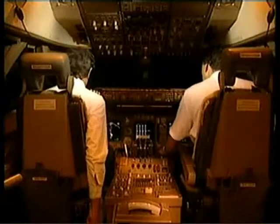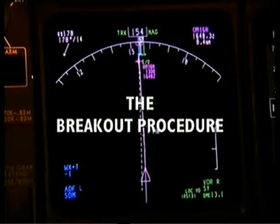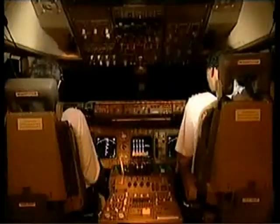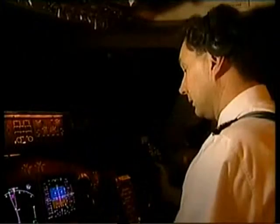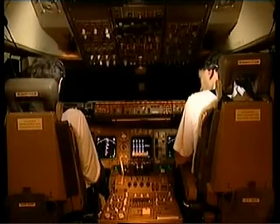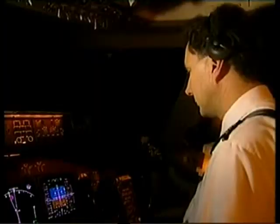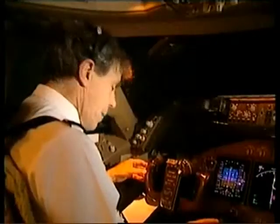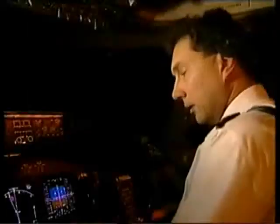I have control. Handing over. Oscar Juliet Alpha cleared for ILS PRM approach runway 16 right, call tower 120.5. ILS PRM approach, 16 right, 120.5, Oscar Juliet Alpha. Monitor the PRM frequency — volumes are the same. All completed.